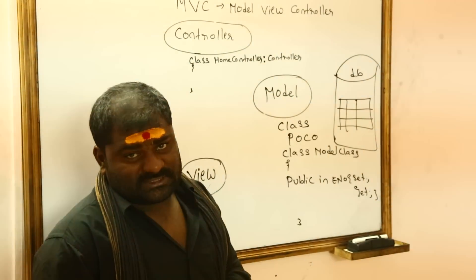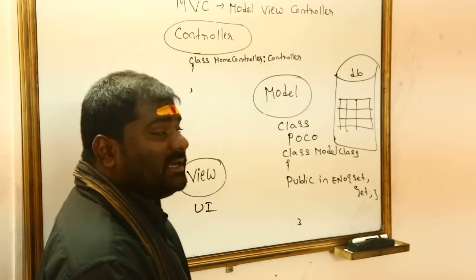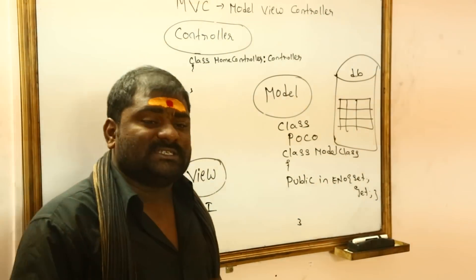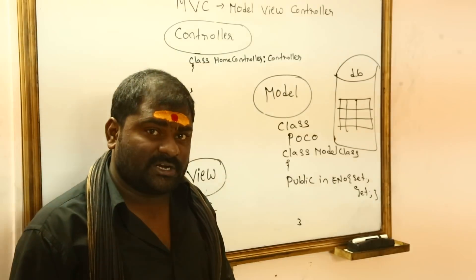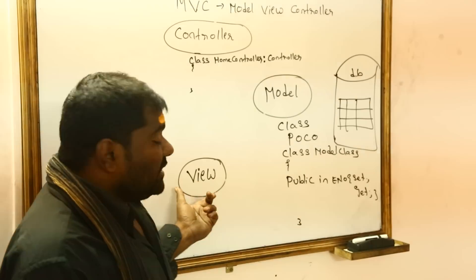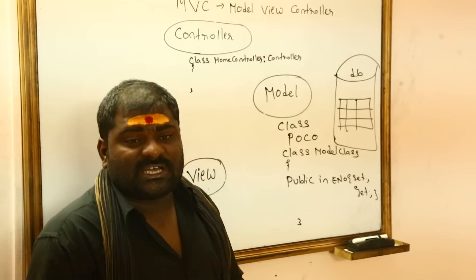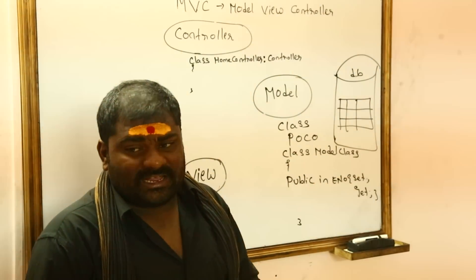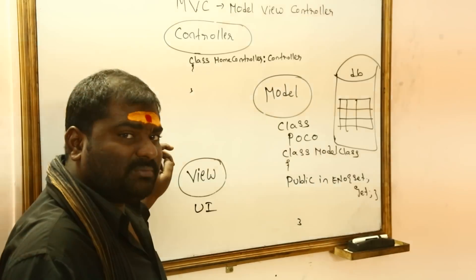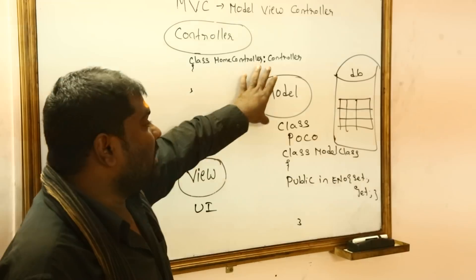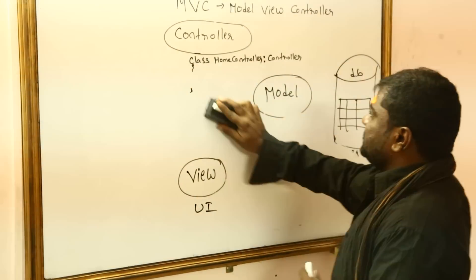Model will communicate with the database. View is nothing but the user interface. In ASP.NET you have default.aspx for designing code and default.aspx.cs for business logic. In MVC, the .aspx file is replaced with .cshtml — C# HTML. View consists only of user interface code. The database logic you write inside the model; the user interface design you write inside the view.